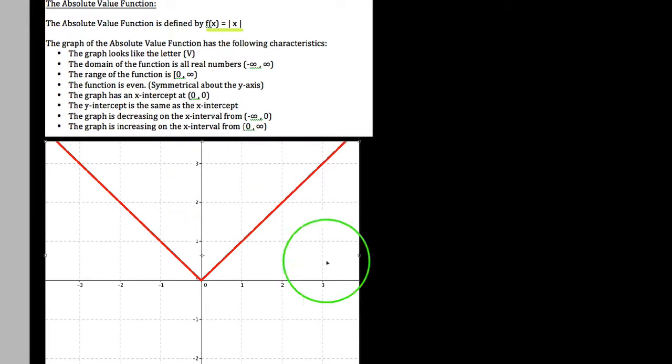So let's talk about this graph, what are some things we know about it? Starting with this, the basic shape of this graph is it looks like the letter V, just like our parabolas look like U's, this looks like the letter V.